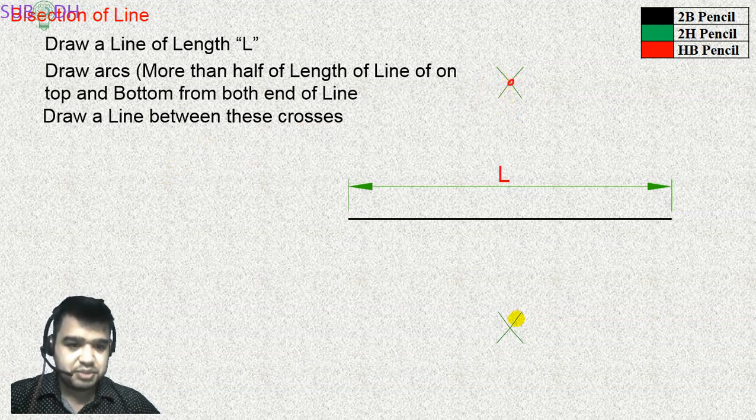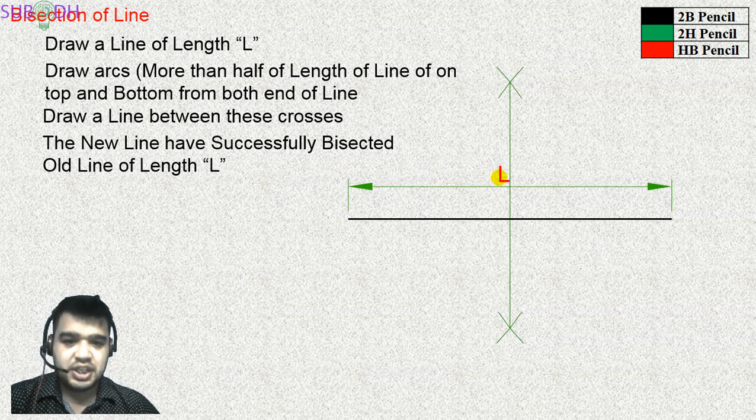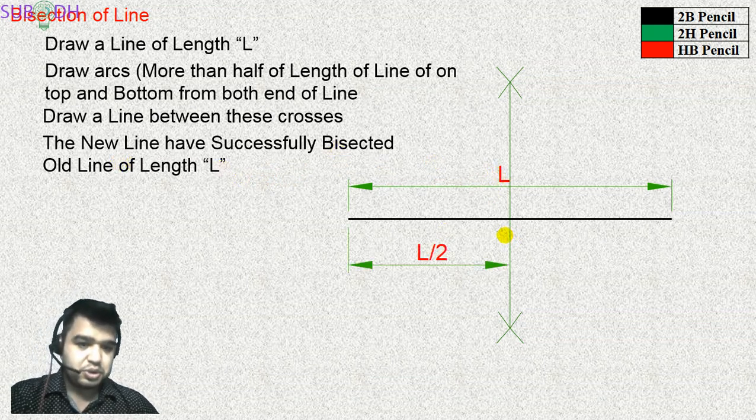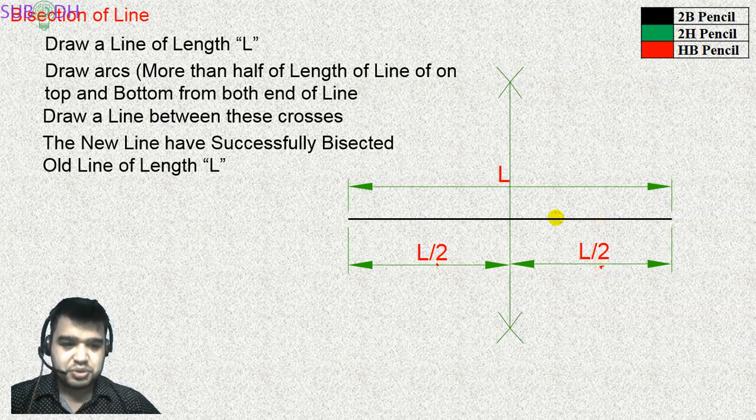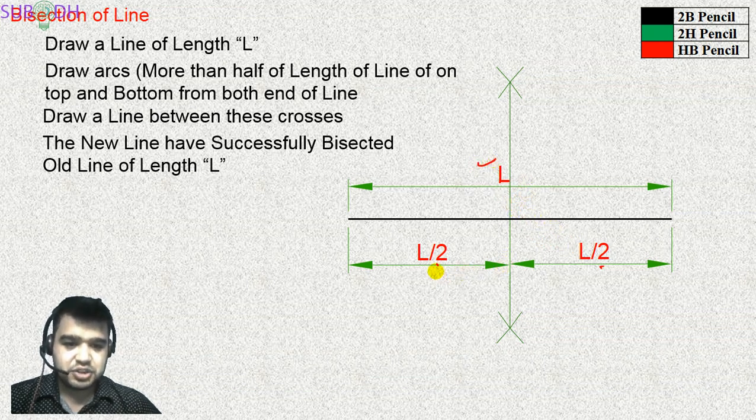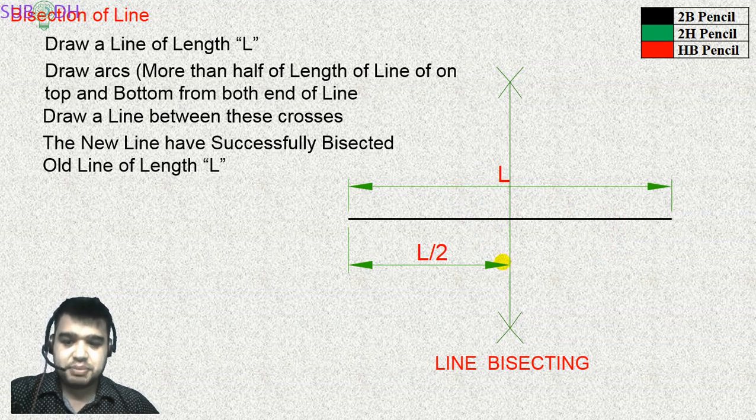We can draw a line between this cross, between the two intersection points. Drawing a line between the two cross points completes the bisection. In this condition, we can select L or L by 2, and one can be erased if needed.